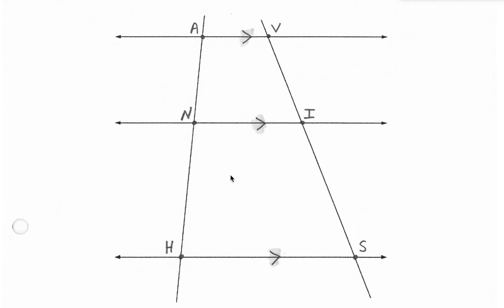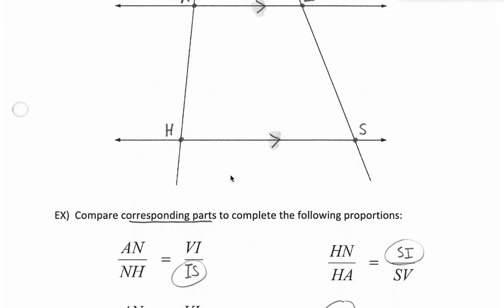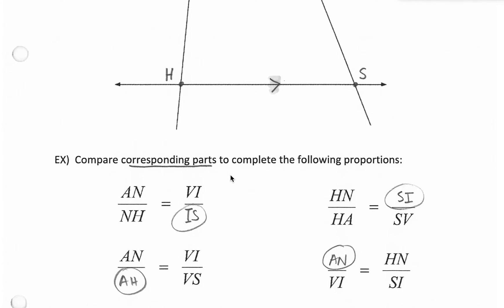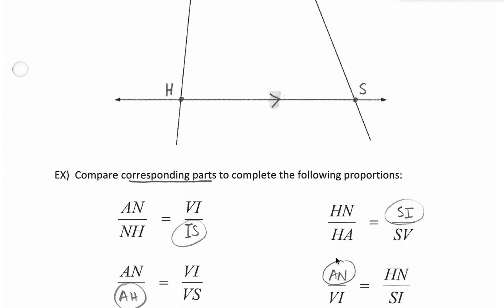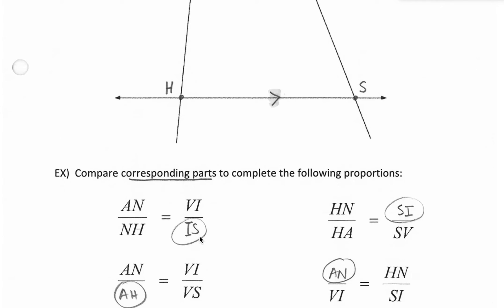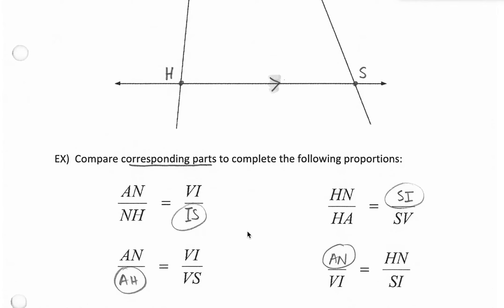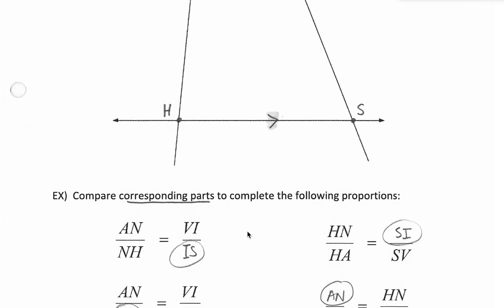You could fill in this diagram with these letters and then we'll be able to complete these ratios. So AN to NH, that's just comparing the top left to the bottom left. So to correspond, we must compare the top right to the bottom right. So VI to IS. If you think you got it, you can go ahead and complete these ratios and then check your work. Otherwise, I'm going to keep explaining it.